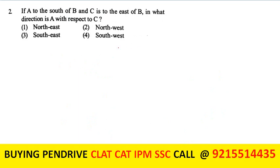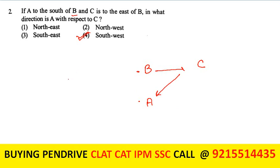Next statement: A is to the south of B. Let us say B is here. A is to the south of B and C is to the east of B, meaning C is here. We have to find the direction of A with respect to C. A is in the south and west of C. The answer is south-west.